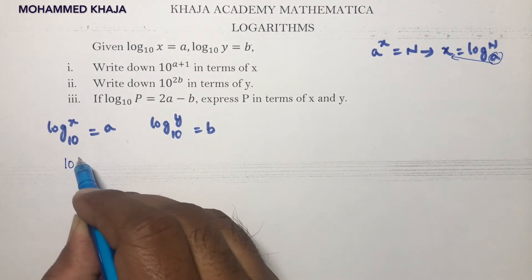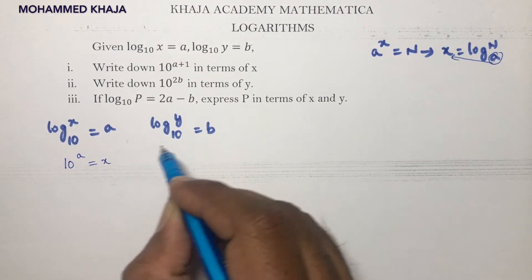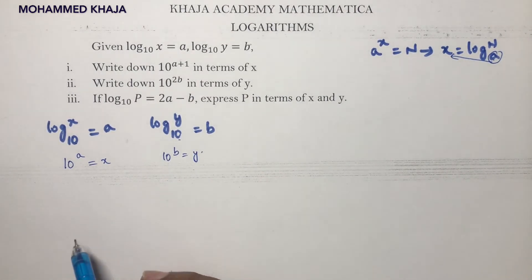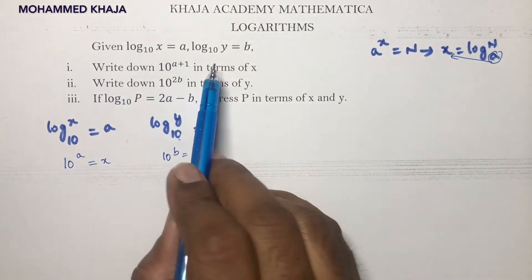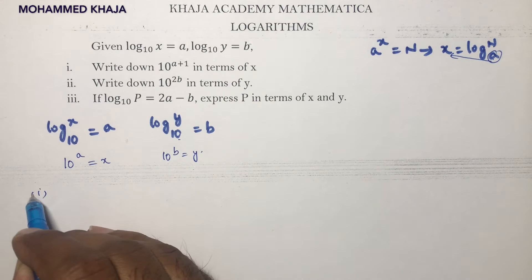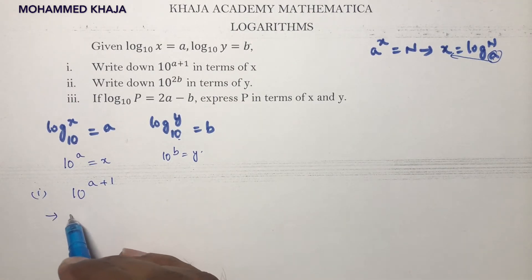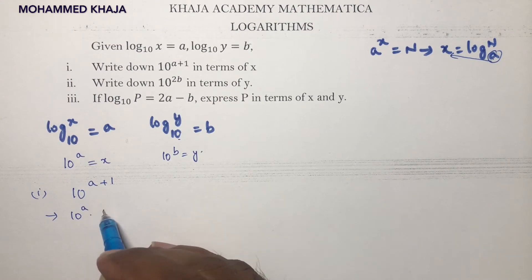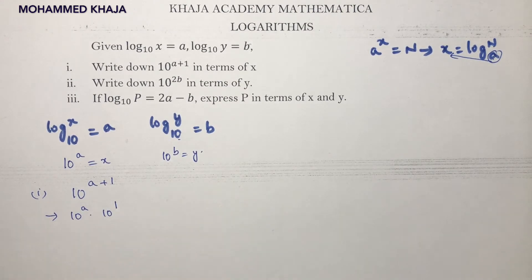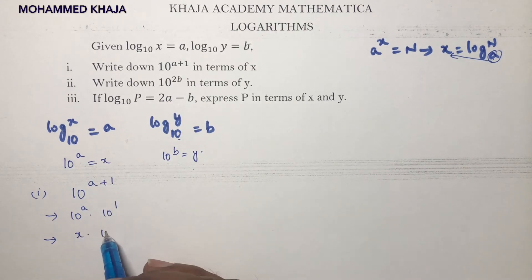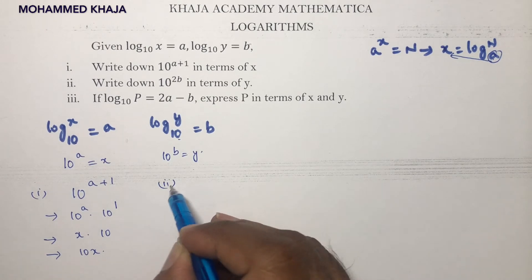First question: write 10^(a+1) in terms of x. We split it as 10^a × 10^1. Since 10^a = x, the answer is 10x.